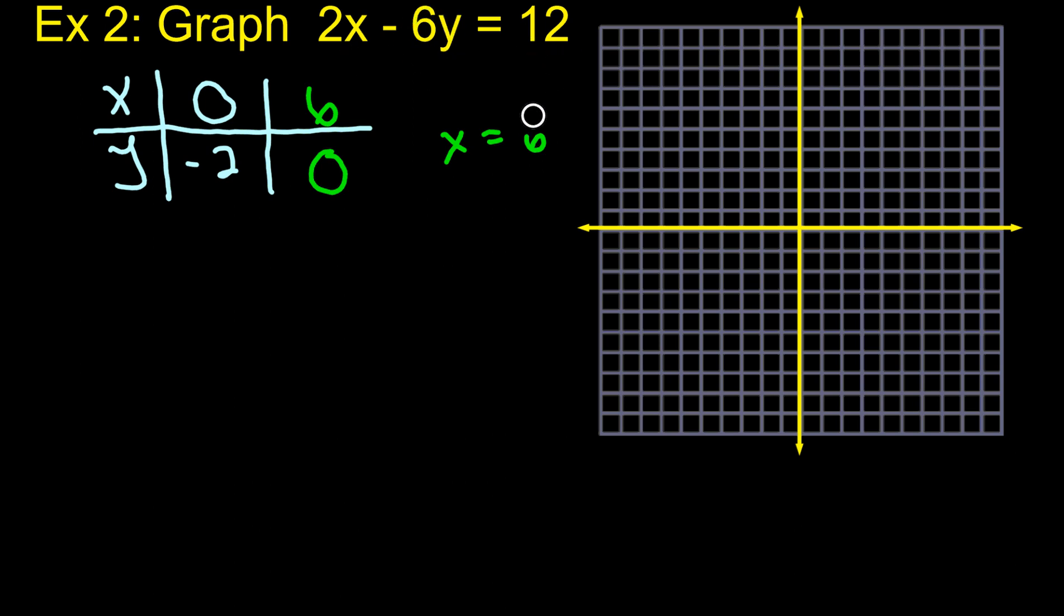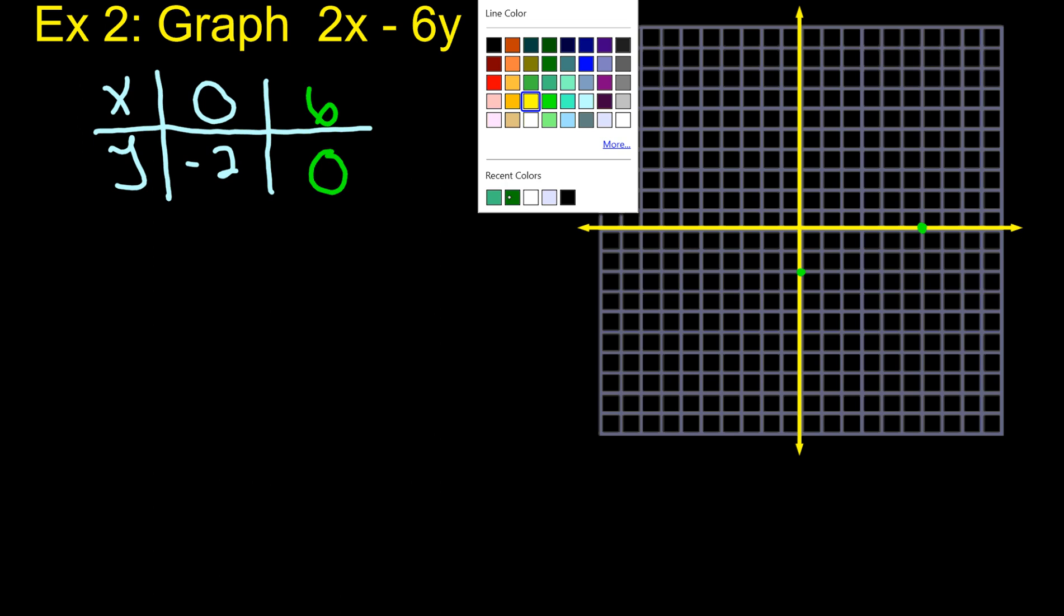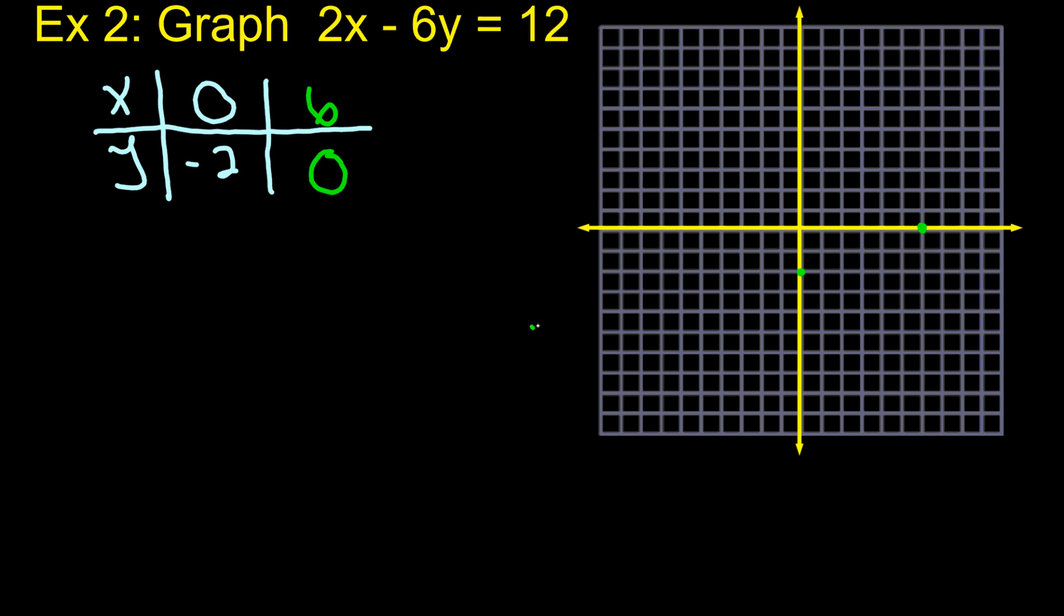So right now, I have two points. I'm going to get rid of this work here. I've got 0, negative 2, over 0, down 2. And then 6, 0, over 6, up 0. And then what you do is you grab your ruler and you make a nice straight line connecting those two dots. And I'll extend it out in both directions. So this is going to be our line. It passes through those two points.